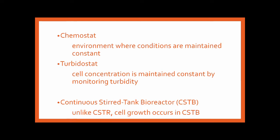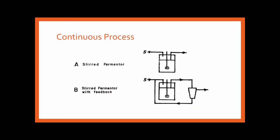In continuous processes, stirred tank bioreactors are typically used — the continuous stirred tank bioreactor, or CSTR (referred to as a continuous stirred tank bioreactor when using living organisms). This is a stirred fermentor where substrate comes in and product goes out. These represent the different modes of continuous bioreactor designs.